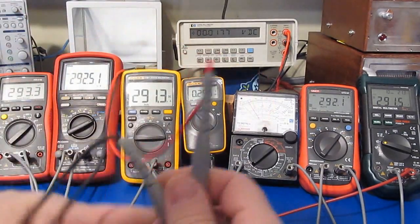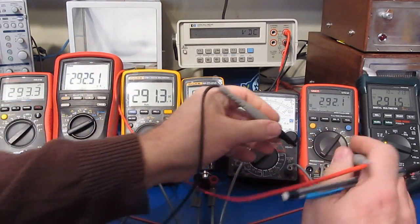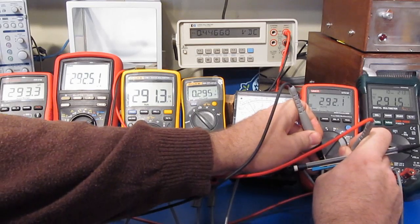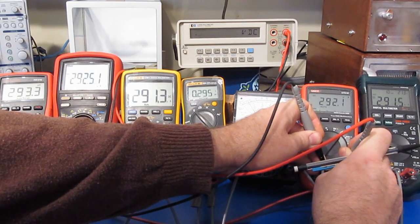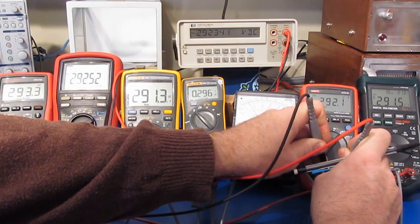And the UT61E, which I said was about a 1k ohm resistor. I'm going to expect it's going to be 290 or so. Yep, 292.